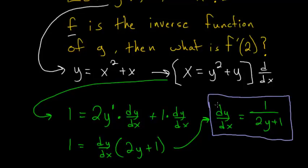This equation here is the derivative of the inverse of our function g of x. We need to figure out this evaluated with an x value of 2, but notice the right-hand side only has y's in it, so we need to figure out when x is 2, what is y in our inverse function.